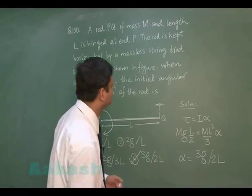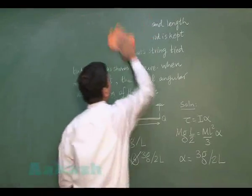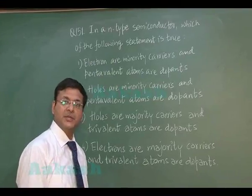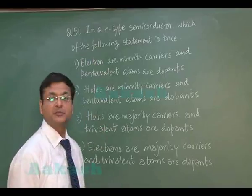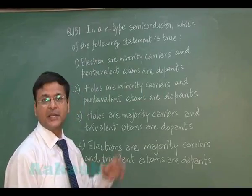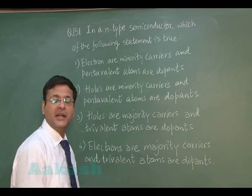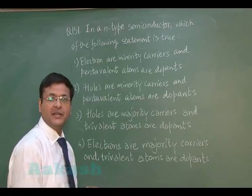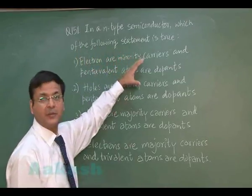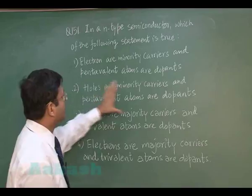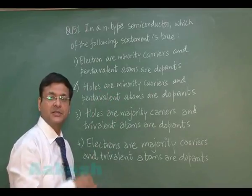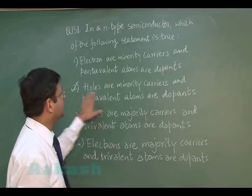Question 151 is a purely theoretical question based on semiconductor electronics, specifically the basic properties of n-type materials. In any n-type material, electrons are the majority carriers and holes are the minority carriers. You achieve n-type materials by doping with pentavalent atoms such as phosphorus and arsenic. The most appropriate option is the second one: holes are minority carriers.